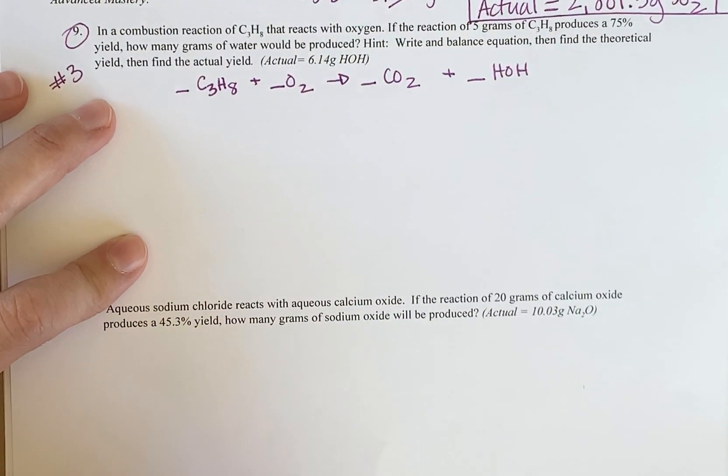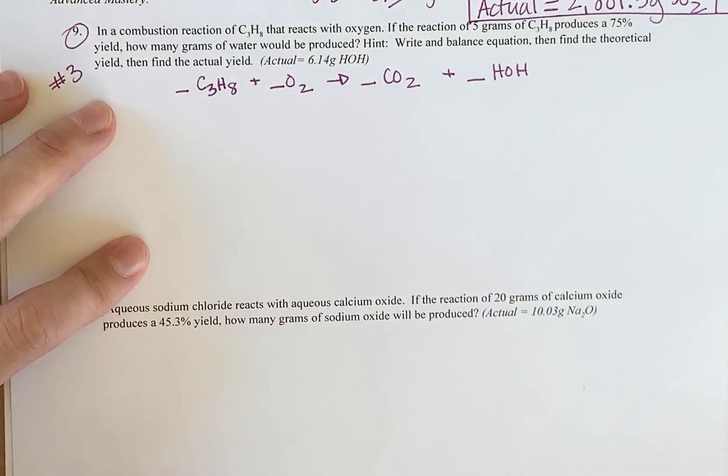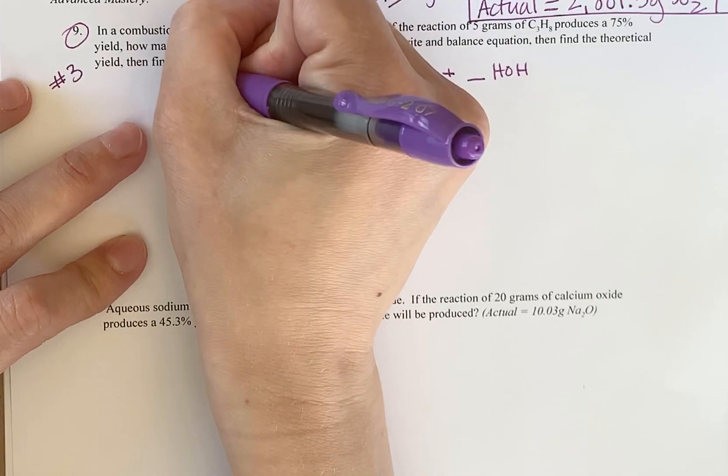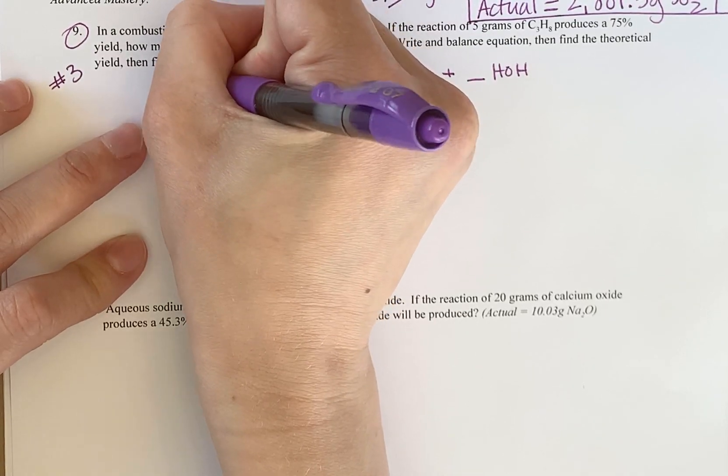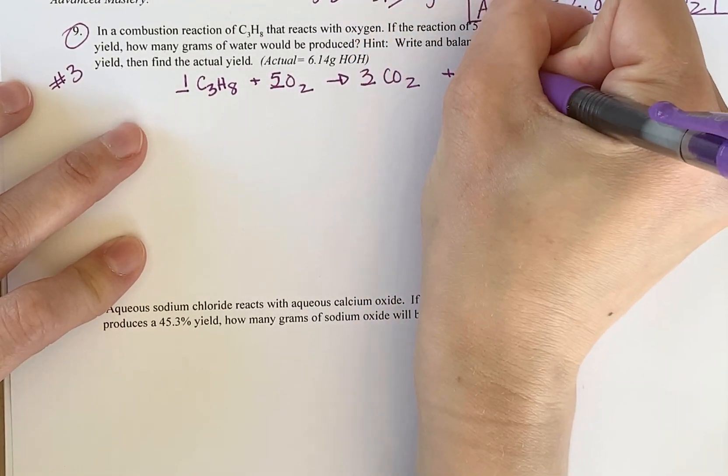So now I have predicted my products. I need to balance my particles. Well, it's a combustion reaction. Those particles are balanced. So I balance my equation by adding my coefficients in front. Turns out when I do that through atom inventory, it's 1534.